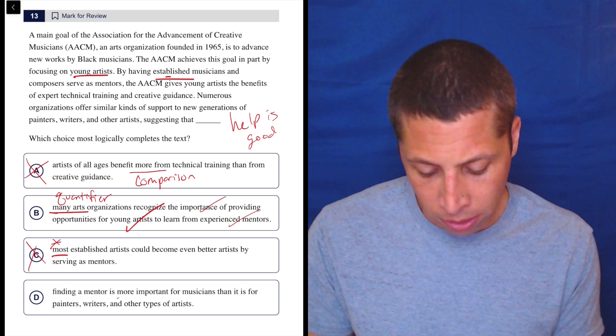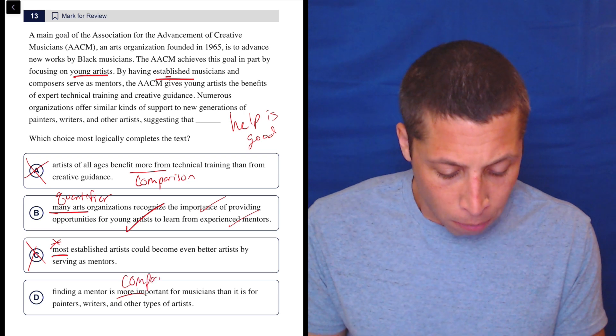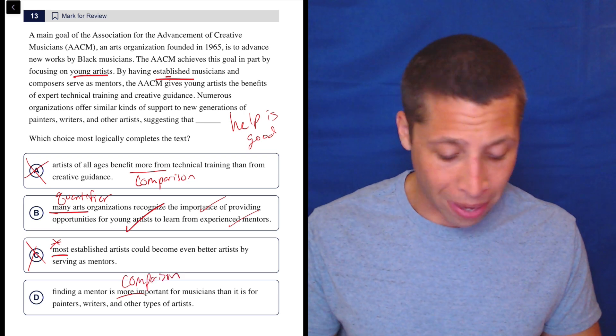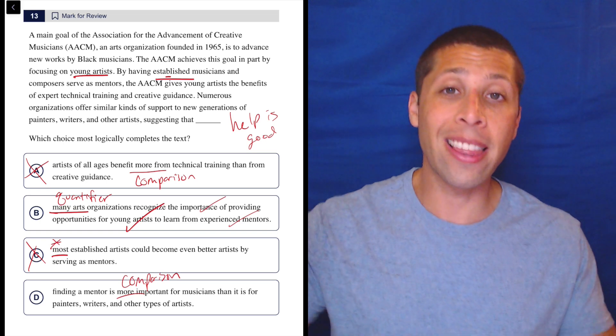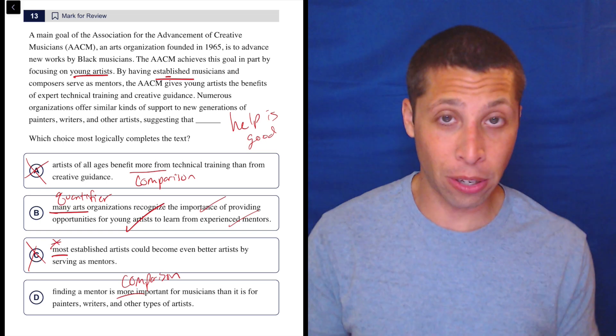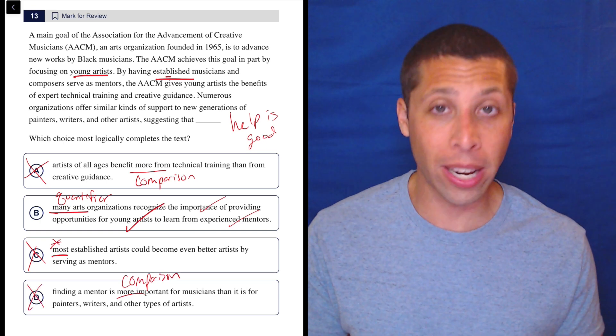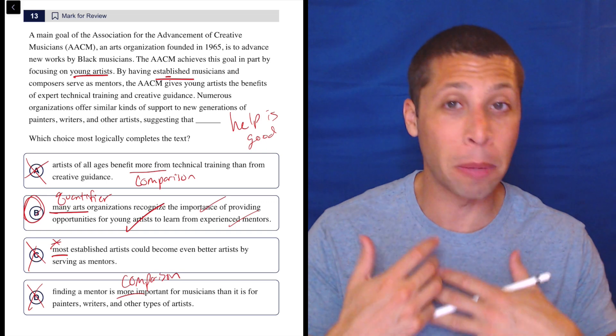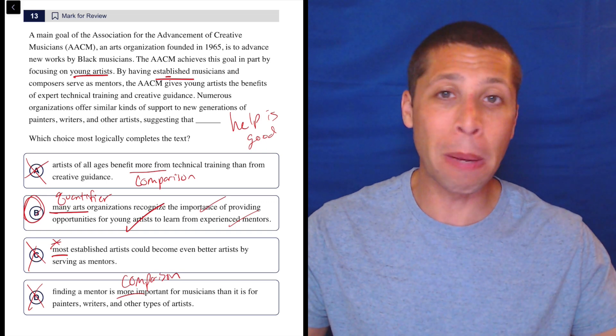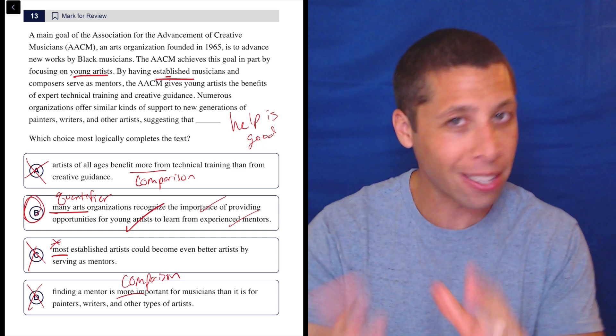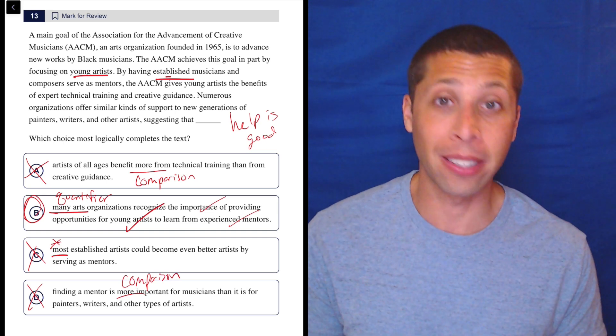Finding a mentor is more important, there's another comparison, more important for musicians than it is for painters, writers, and other types of artists? No. The reason they're bringing up the other types of artists is to say that they do this too. This is good for everyone. It's not a comparison ranking them. This is purely just a very bland passage saying helping other younger people who are in the creative arts is good. That's all this is doing. And choice B basically sticks to that.